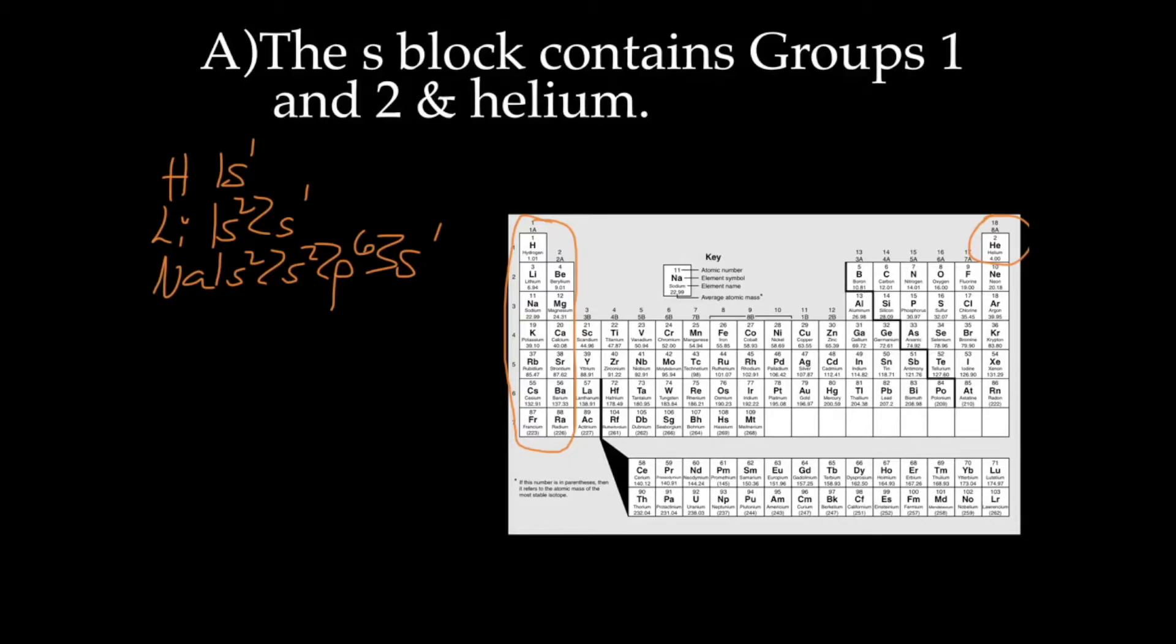So the valence electrons for all of the first group, group 1, are s1. So we've got here, helium ends in 1s1, lithium 2s1, sodium 3s1. So potassium would be 4s1, rubidium would be 5s1, cesium would be 6s1, and francium would be 7s1.